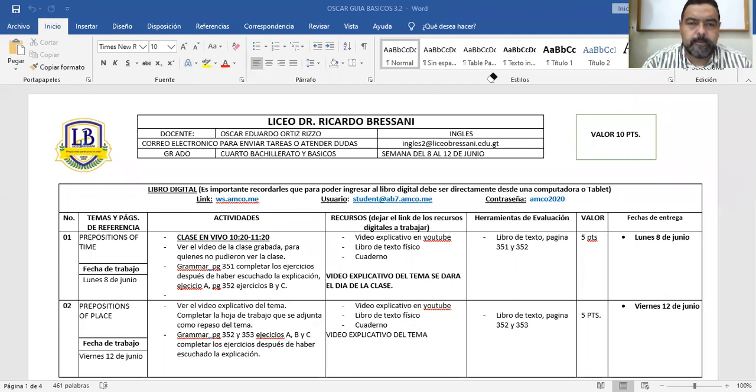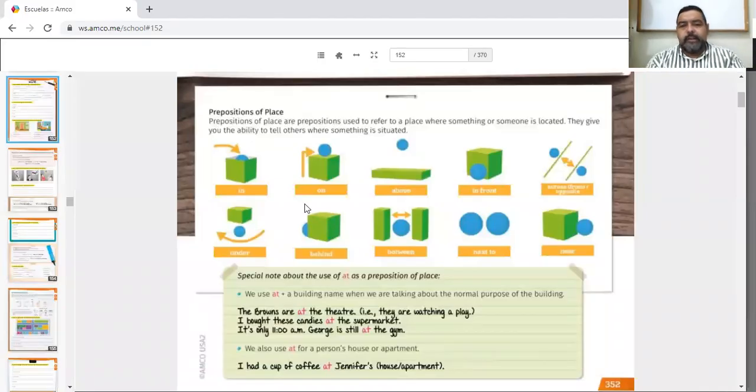Let me go to book. Okay, here we are. Do you have the book on this page? If you don't have the book, you can just follow me here on the screen. And the title says, just let me get another color. Prepositions of place.